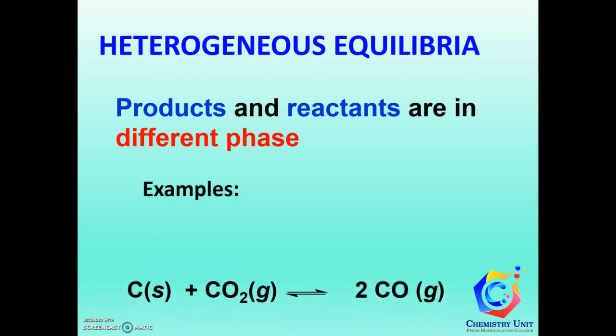For example, carbon is in solid phase, while carbon dioxide and carbon monoxide are in gas phase. They are in different phases, so this is a heterogeneous equilibrium.